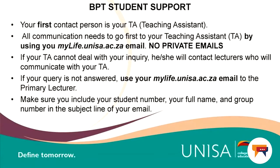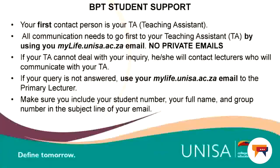All communication needs to go first to your TA using your MyLife UNISA email. We urge you not to use private emails — when you use your MyLife UNISA email, your student number is automatically included. If your TA cannot deal with your query, then contact the primary or secondary lecturer, who will respond to you, but you need to provide a copy of the emails previously sent to the TA.